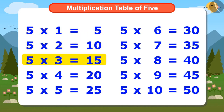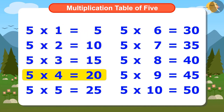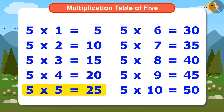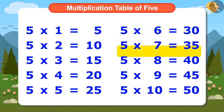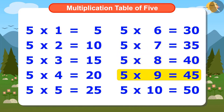5 threes are 15, 5 fours are 20, 5 fives are 25, 5 sixes are 30, 5 sevens are 35, 5 eights are 40, 5 nines are 45, 5 tens are 50.